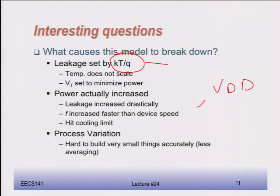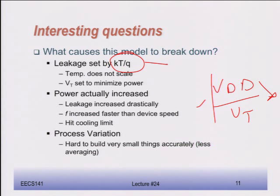Leakage has become such a dominant factor that in certain circumstances — if you don't have a circuit that switches all the time — leakage might dominate your power dissipation. To prevent that, we haven't scaled the threshold voltage: if leakage is a real issue, don't get too close to threshold. But as a result, VDD/Vt is going down. In the past we scaled both VDD and Vt together; now we only scale VDD — that reduces current overdrive and impacts performance. That's the big challenge.